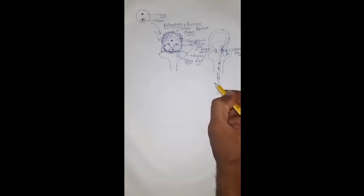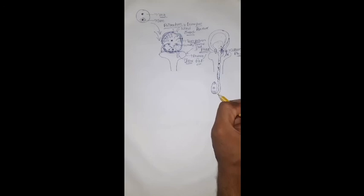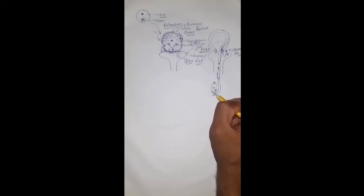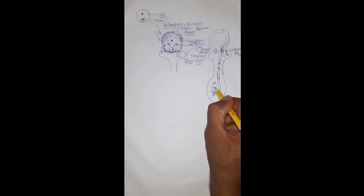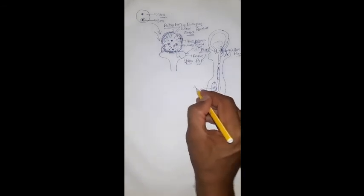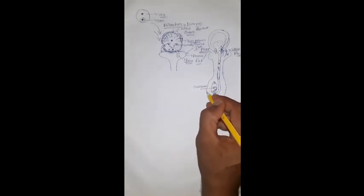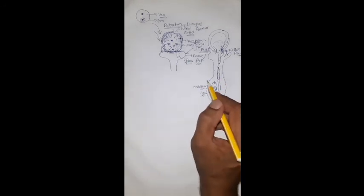Finally, the pollen tube reaches the embryo sac. After reaching the embryo sac, the two gametes are released into it. One gamete fuses with the egg cell, and another fuses with the central cell — the endosperm cell. This is fertilization. Up to the gamete formation, it is considered as male gametophyte development.